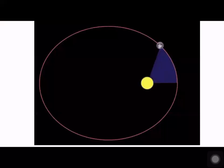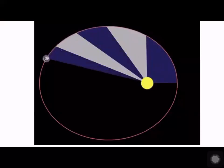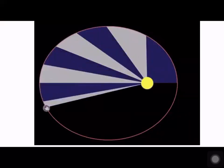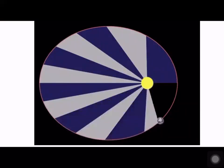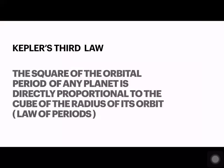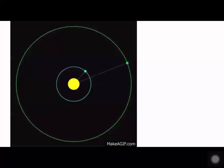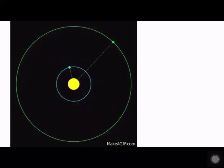As the planet moves around the sun, if the gray area takes equal time to travel, the area covered is equal. Then Kepler's third law: the square of the orbital period of any planet is directly proportional to the cube of the radius of its orbit — this is the law of periods. Different planets have different orbital time periods and different radii.